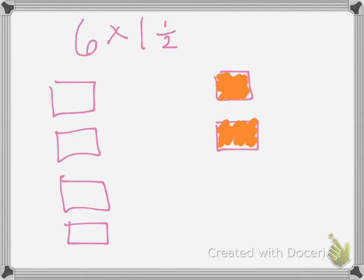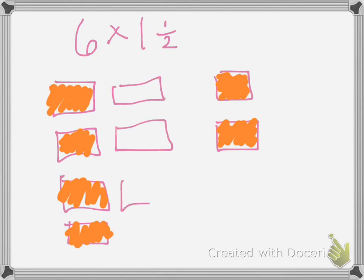So one, two, three, four, five, six holes, but then I still have my half. So I'm going to go ahead and draw next to each one another hole, and then partition it into halves.